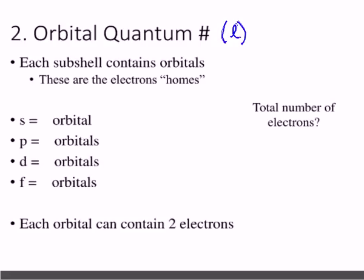The orbital quantum number talks about two things: the sub-level, which is the letter — SPDF in that order — and the orbitals within each sub-level. As we start doing electron configurations, it's important to know the order of those letters. Each sub-level contains a different number of orbitals. The orbitals are like the bunk beds in the room.